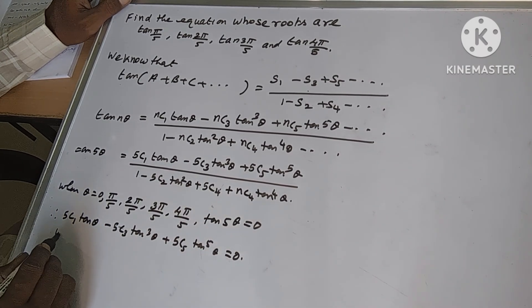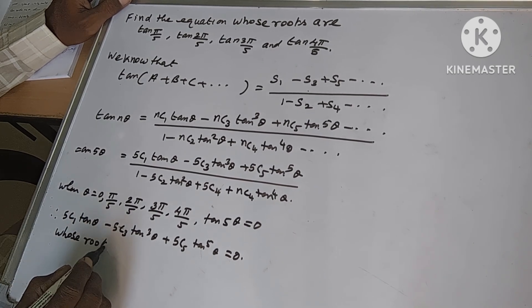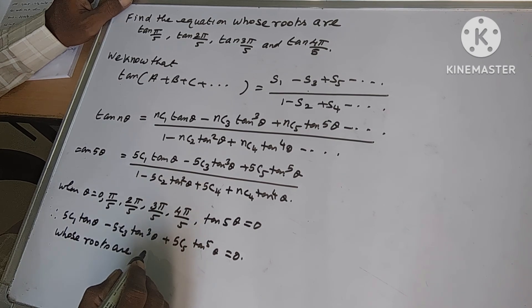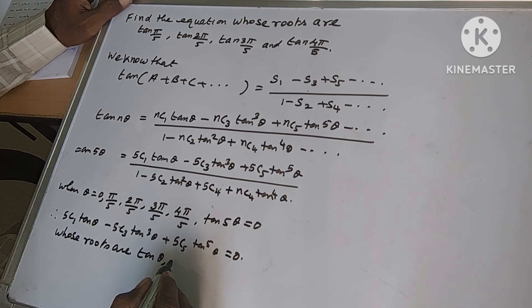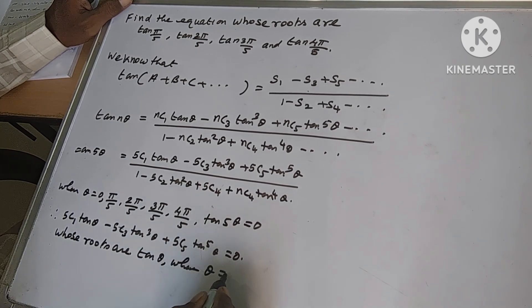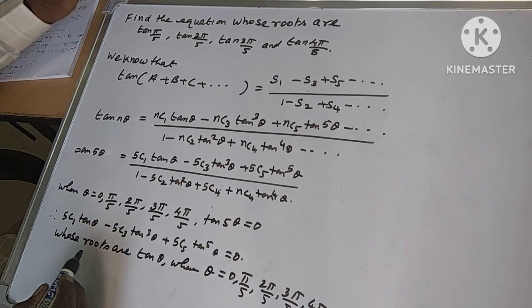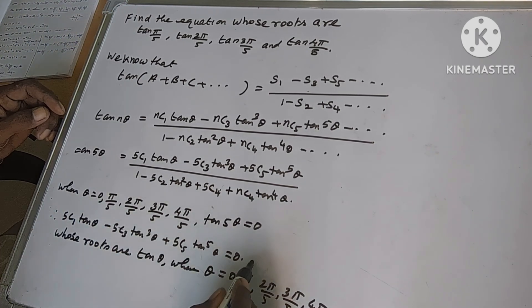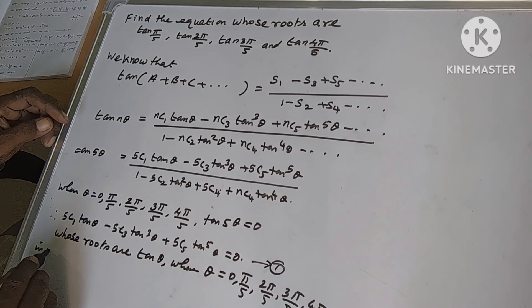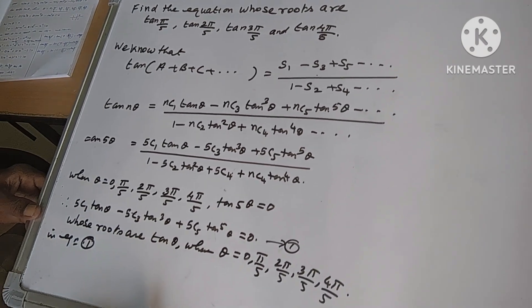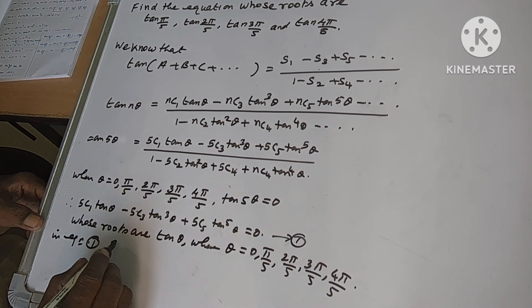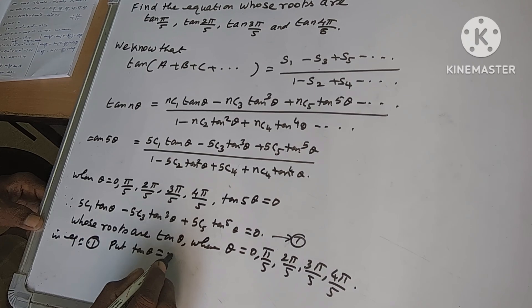This equation has roots tan θ where θ equals 0, π/5, 2π/5, 3π/5, and 4π/5. So now, in this equation — equation 1 — put tan θ equal to x.